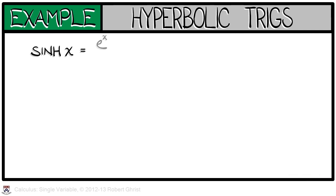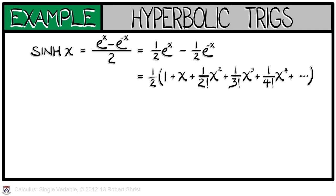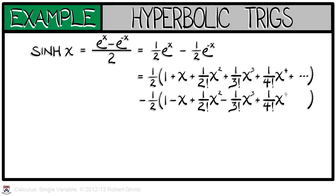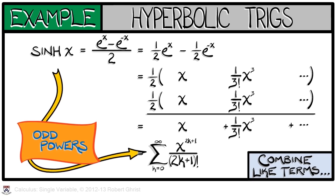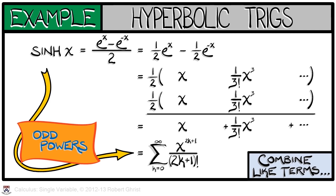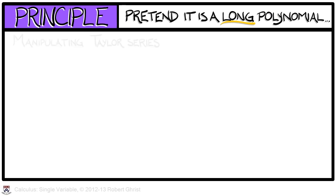Does the same hold for the hyperbolic sine? Following the same method, we use the Taylor Series for e to the x and for e to the minus x, but now instead of adding them, we subtract the latter from the former. This leads to cancellation of all even-powered terms, and distributing the minus sign and adding, we obtain all the odd degree terms in the Taylor Series for e to the x. Thus, sinh of x equals the sum k goes from 0 to infinity of x to the 2k plus 1 over quantity 2k plus 1 factorial — just like sine.